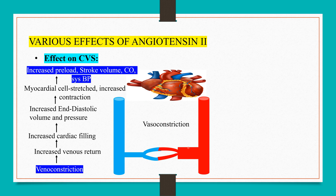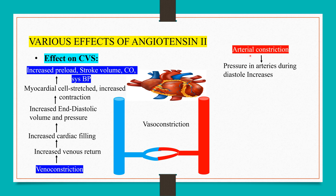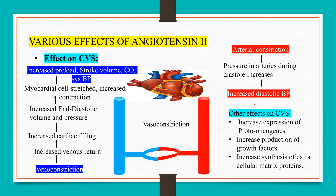When angiotensin 2 receptors present on arterioles are stimulated, there will be arteriolar constriction, which increases pressure in arteries during diastole, resulting in increased diastolic blood pressure. As a result, angiotensin 2 increases both systolic and diastolic blood pressure. Other cardiovascular effects include increased expression of proto-oncogenes, increased production of growth factors, and increased synthesis of extracellular matrix proteins, all resulting in hypertrophy and cardiac remodeling.